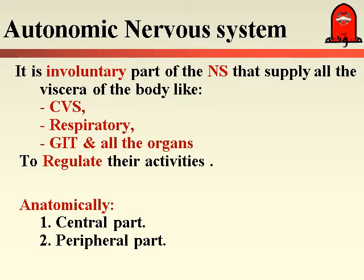The Autonomic Nervous System is the involuntary part of the Nervous System. It supplies all the internal organs or viscera of the body — like the cardiovascular system, the respiratory system, GI tract, urinary system, genital system, and glands. All the organs inside the body are supplied by Autonomic Nervous Fibers.